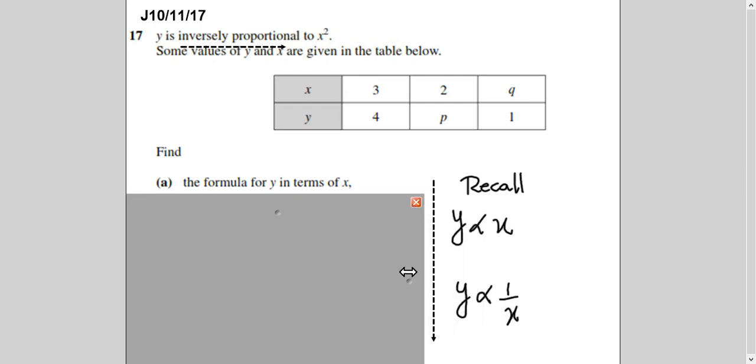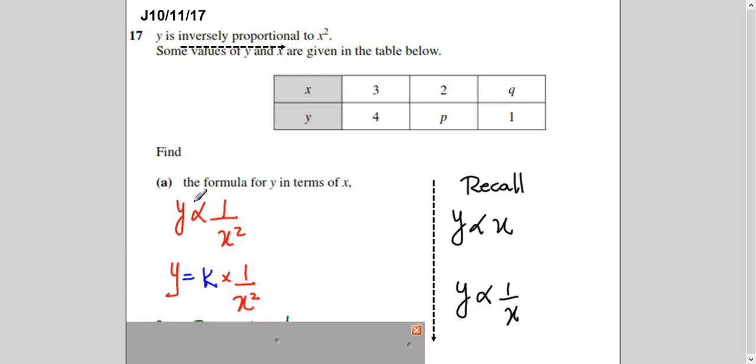So you need to recall here first of all when question is saying Y is directly proportional to X you write it like this. When question says Y is inversely proportional to X you write it like this. Inversely proportional means it goes into fraction, directly proportional like this. In this question it is saying inversely proportional to X square. It means Y proportionality symbol 1 divided by X square. Now you remember when you remove proportionality symbol you write equals to K. This proportionality symbol is replaced by equals to K. Now K times 1 is K so it will be K upon X square.